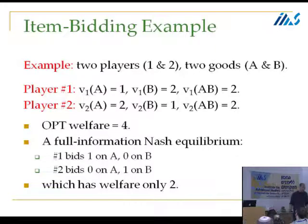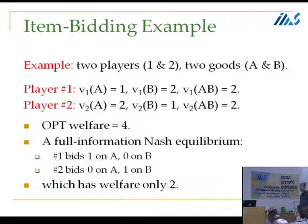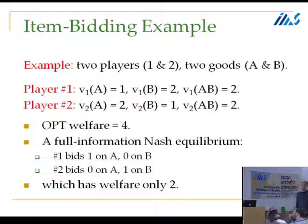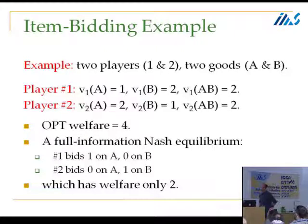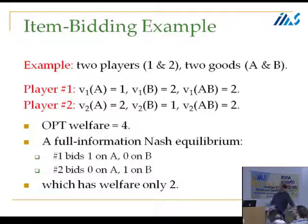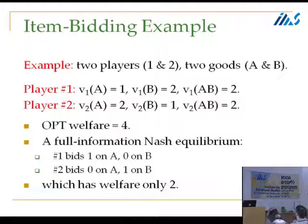Let me show you an example to warm up. Two bidders, two goods, both unit demand. Bidder one would pay two for good B and one for good A. Bidder two is the opposite: pays two for good A and one for good B. The optimal solution gives B to bidder one and A to bidder two, for a welfare of four. That can arise as a Nash equilibrium in the full information game, but there will be others as well.